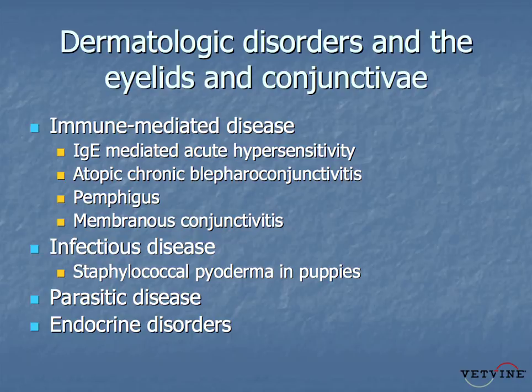Membranous conjunctivitis and uveodermatologic syndrome are immune diseases that we'll talk about in some detail in the next section of the presentation. And I'll show some examples here of infectious and parasitic disease.